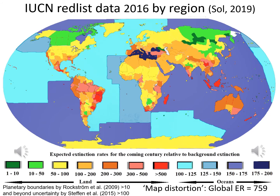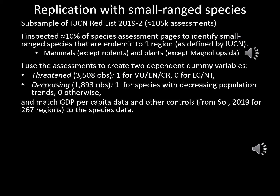My map also suffers from a form of map distortion due to the double counting of species with large ranges. The global extinction rate is roughly 750 times the background rate and at 15% of its theoretical maximum under the assumptions spelled out in the paper. The work I present today is inspired by this map distortion. In the 2019 publication, I had also used ordinary least squares regression analysis to explore the association with GDP per capita, where I found species endangerment increases with GDP per capita.